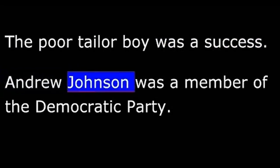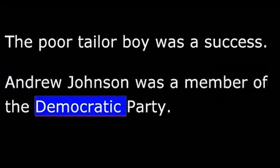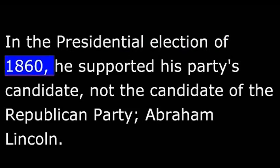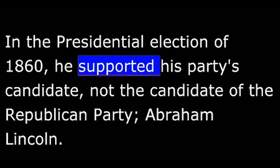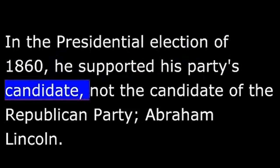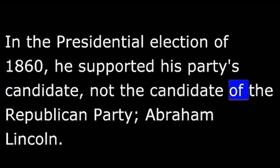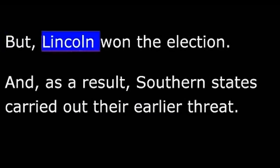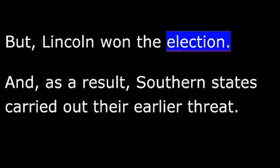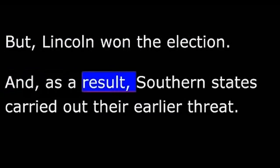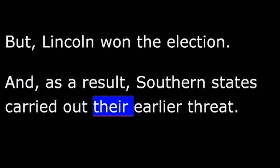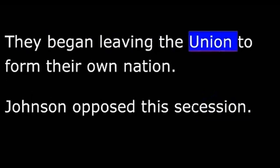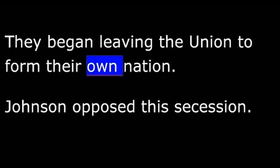Andrew Johnson was a member of the Democratic Party. In the presidential election of 1860, he supported his party's candidate, not the candidate of the Republican Party, Abraham Lincoln. But Lincoln won the election, and, as a result, southern states carried out their earlier threat. They began leaving the Union to form their own nation.